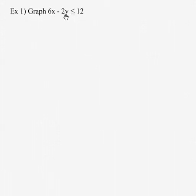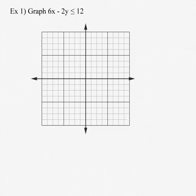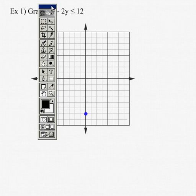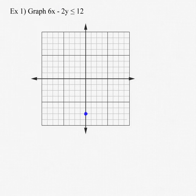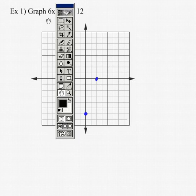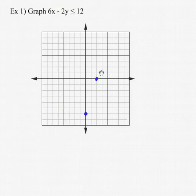We're graphing 6x minus 2y is less than or equal to 12. The shortcut I like to use for graphing is the x and y intercept method. If I put in 0 for x, we see that negative 2y is less than or equal to 12. Pretend it's equal to for a moment, solve for y, and find out that y is negative 6. That's where the graph crosses the y-axis. Then replace y with 0 and solve 6x equals 12, and we find out that x equals 2. That's where it crosses the x-axis — the x and y-intercepts.